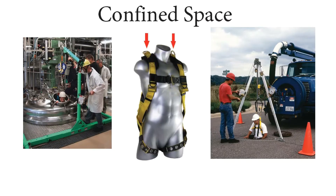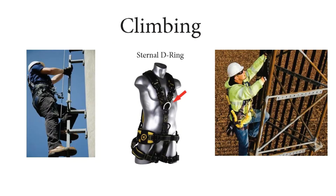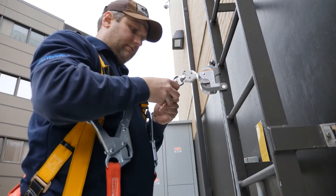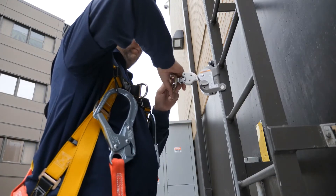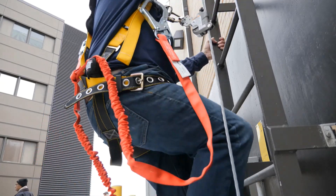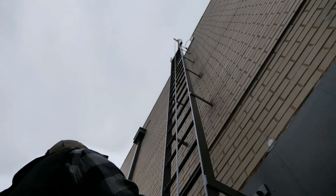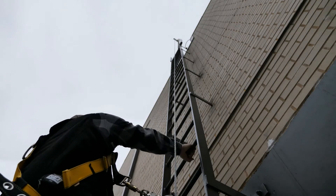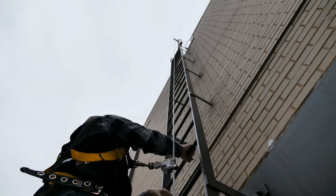Another type of harness is confined space. These harnesses come with shoulder D-rings that are used to lower and retrieve workers from confined spaces. The last type of harness is climbing, which is designed for vertical lifeline systems. In this video, you see the worker attaches himself with a carabiner to his chest or sternal D-ring, and is then able to climb the length of the ladder while being OSHA compliant.